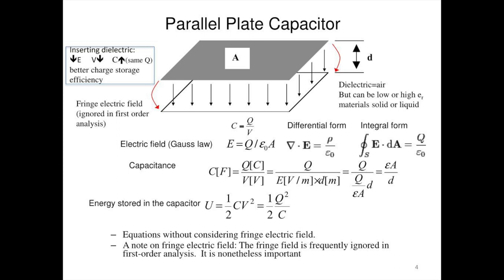For example, the batteries in a camera store energy in the photo flash unit by charging a capacitor. The batteries can supply energy at only a modest rate — too slowly for the photo flash unit to emit a flash of light.